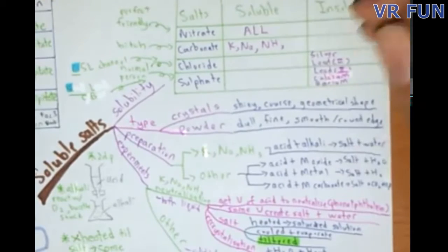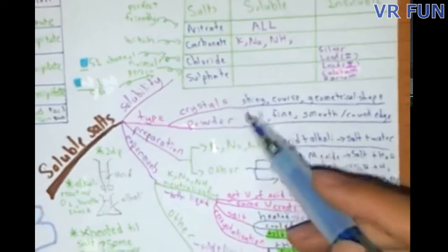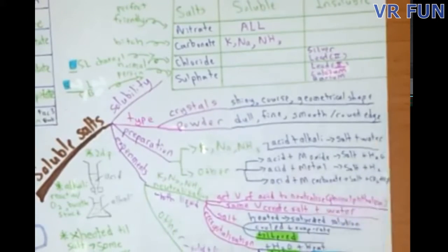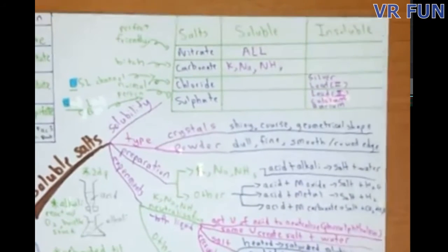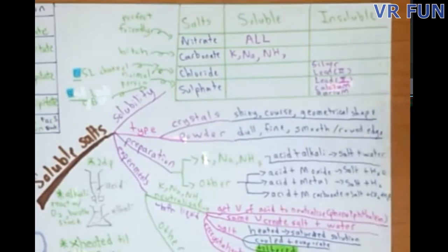Let's talk about the next thing which is just some simple stuff: crystal and powder. For crystal, it is basically things that are very shiny, very coarse, geometric shape. Just go to the supermarket and check out crystal sugar and then check out powder sugar and you know the difference. Powder is like that with fine smooth and round edges.